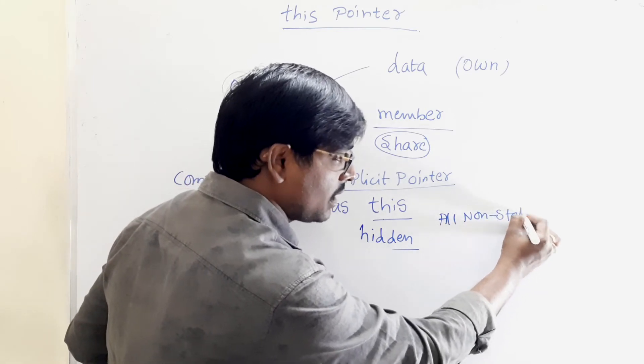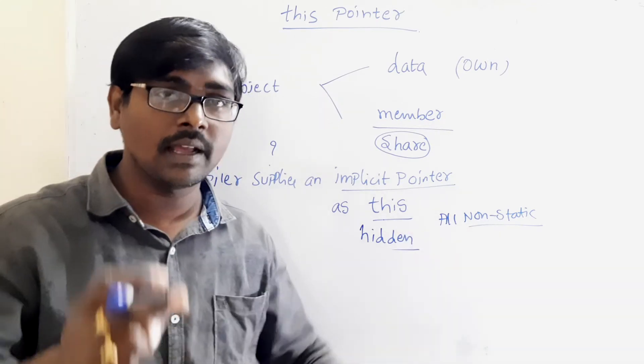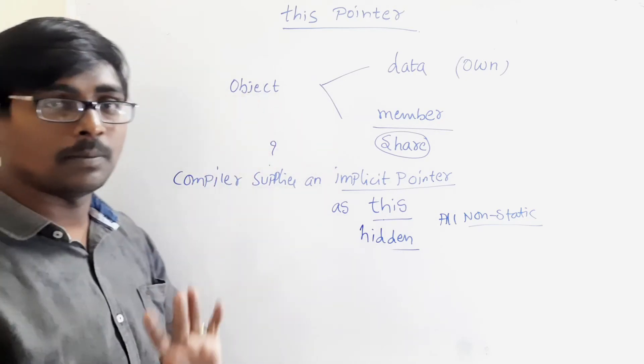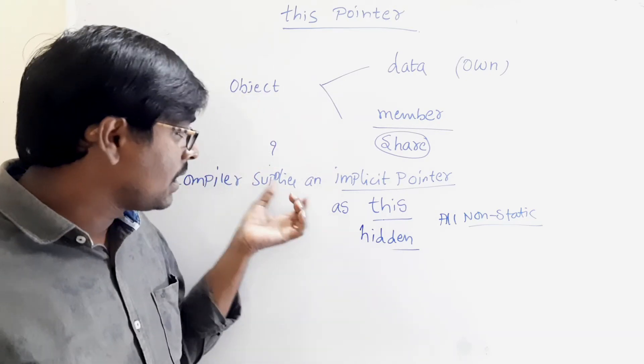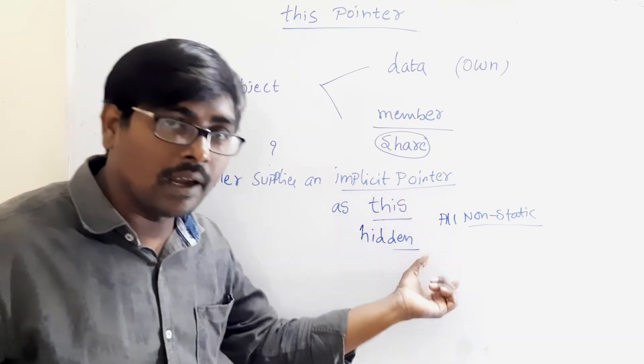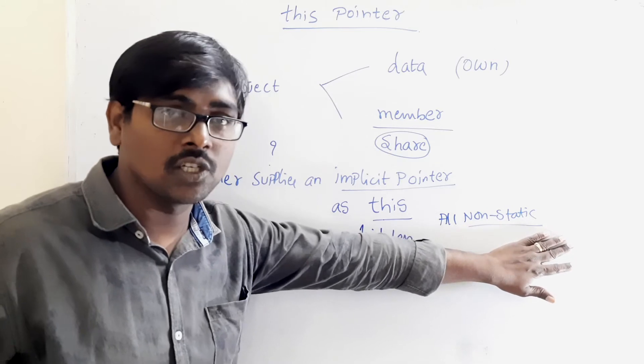Remember, for static, it is not possible. Why? For static, we are not creating objects. The static members are accessed by using the class. But here, the concept is related to objects. So, the this pointer is passed as a hidden argument to all non-static function calls.